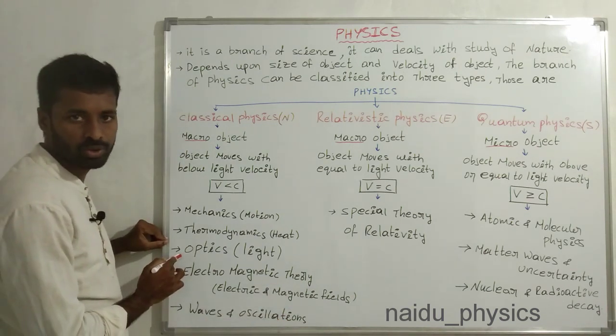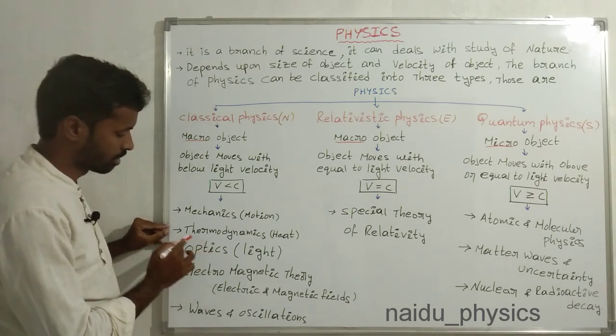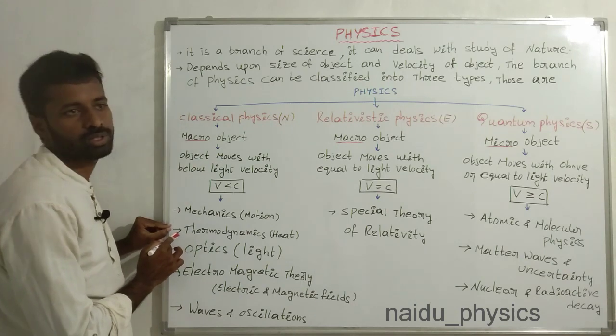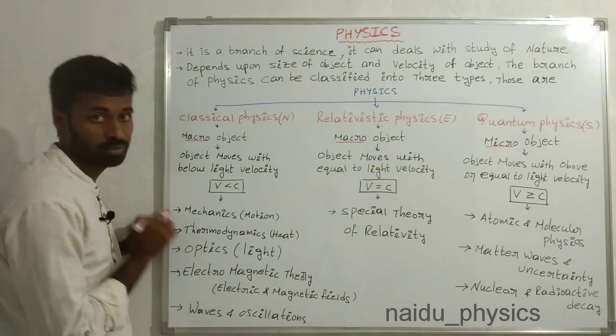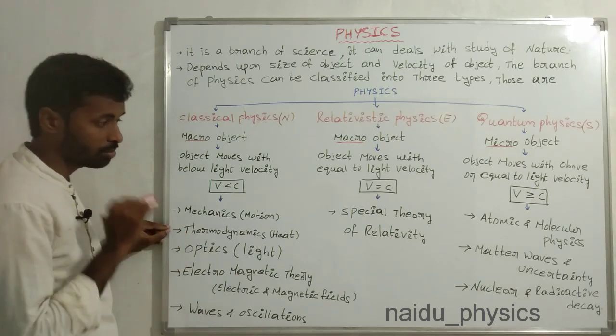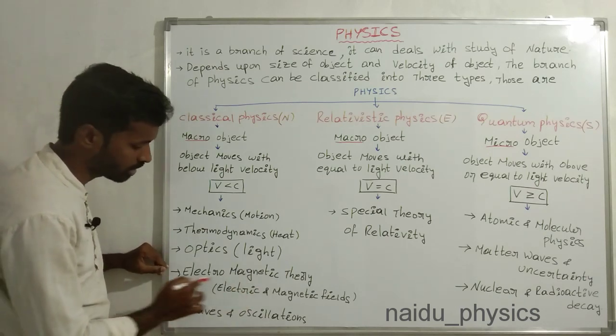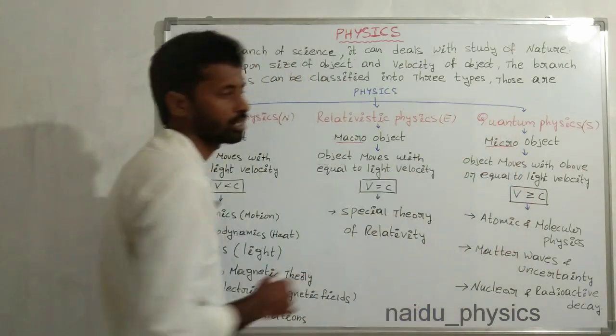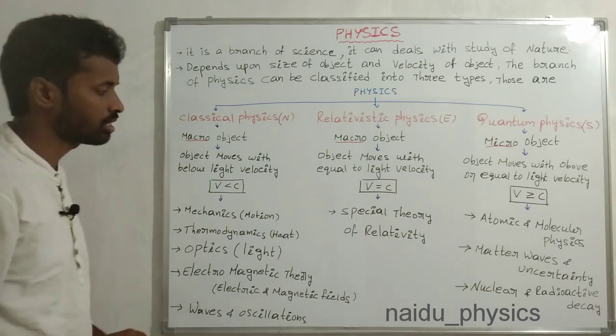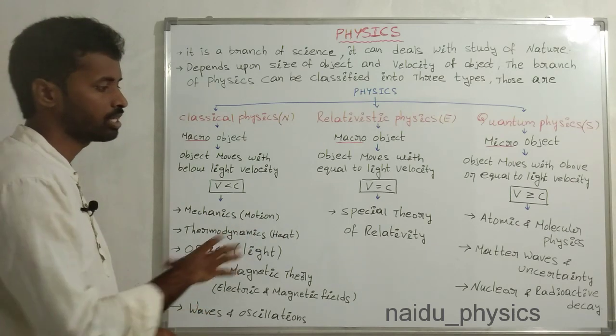Optics we have to study in second B.Sc. Thermodynamics we have to study in second B.Sc. fourth semester. And finally, third B.Sc. fifth semester, we have to study two papers - one is electromagnetic theory, another one is quantum mechanics. This is the overall syllabus of B.Sc. students. Thank you.